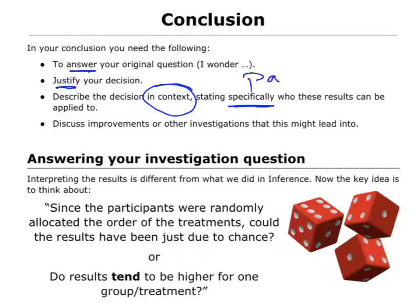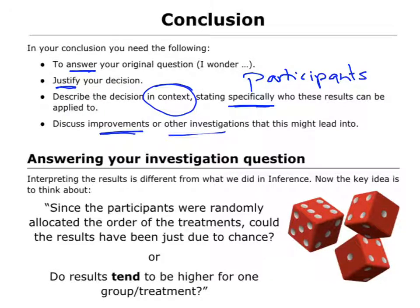Remember back at the beginning we talked about who our participants were — that is one thing we need to be very specific about. These results apply to the people we tested. And then we can look at what other improvements or other investigations we might have.